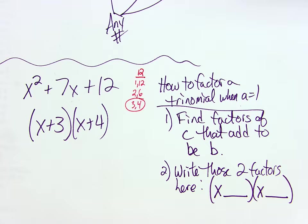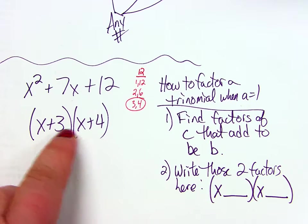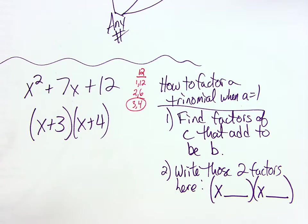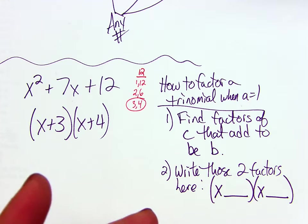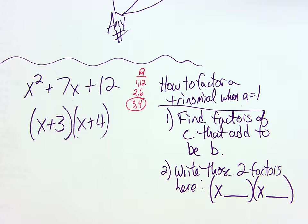It's magic. Now sometimes kids question, well how do you know which factor goes where? Like could you have put the 4 there and the 3 there? Yeah, it doesn't matter because you're just multiplying them together. So the order doesn't matter. The signs matter. This was an easy one because everything was positive. Let's try another easy one.